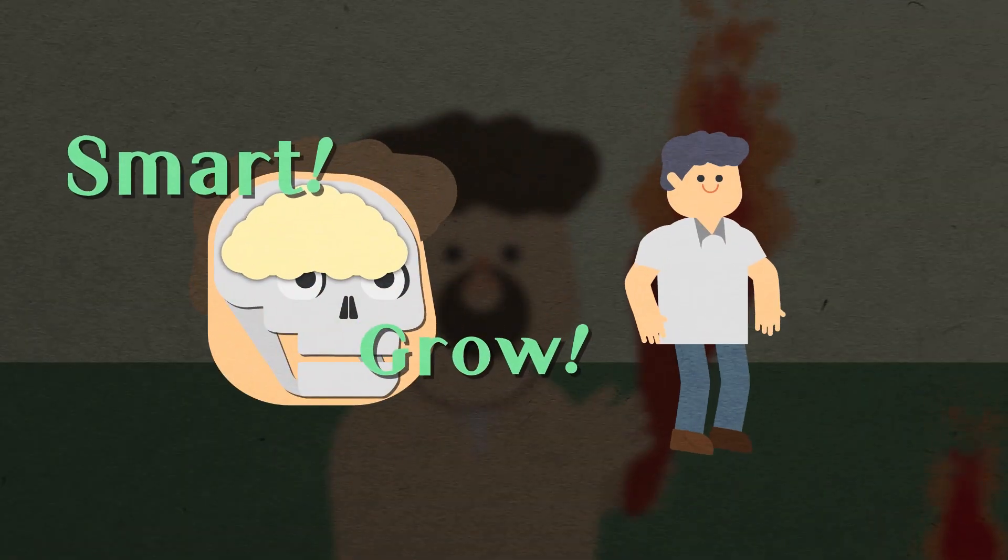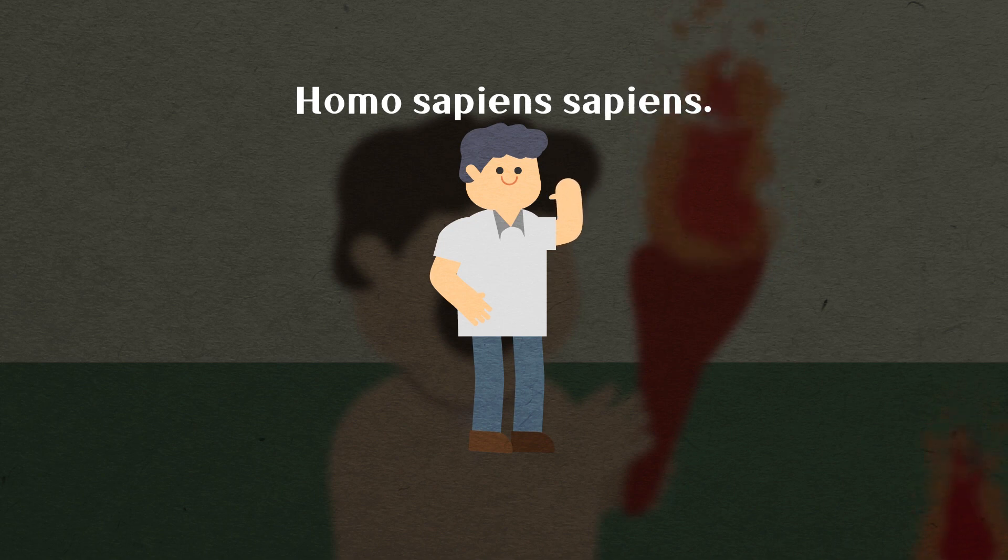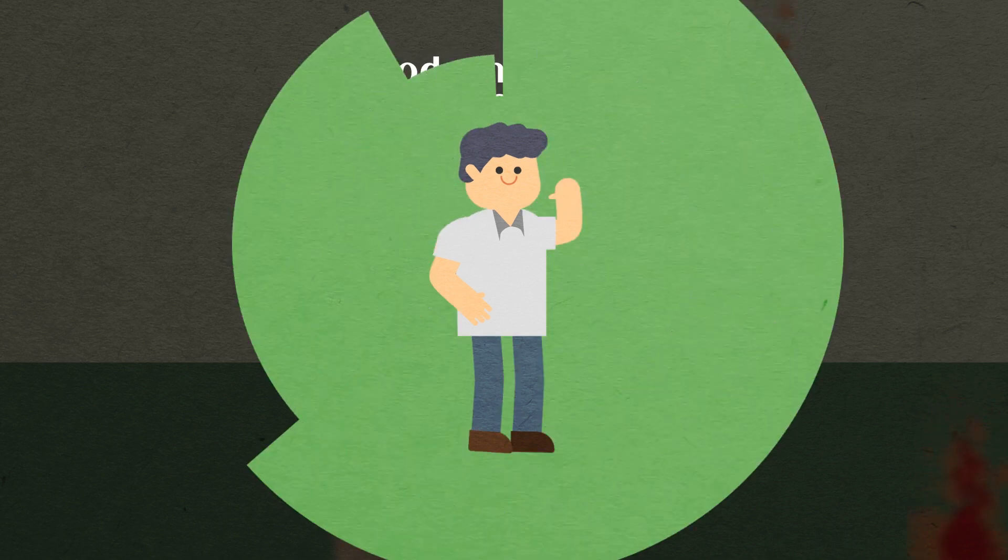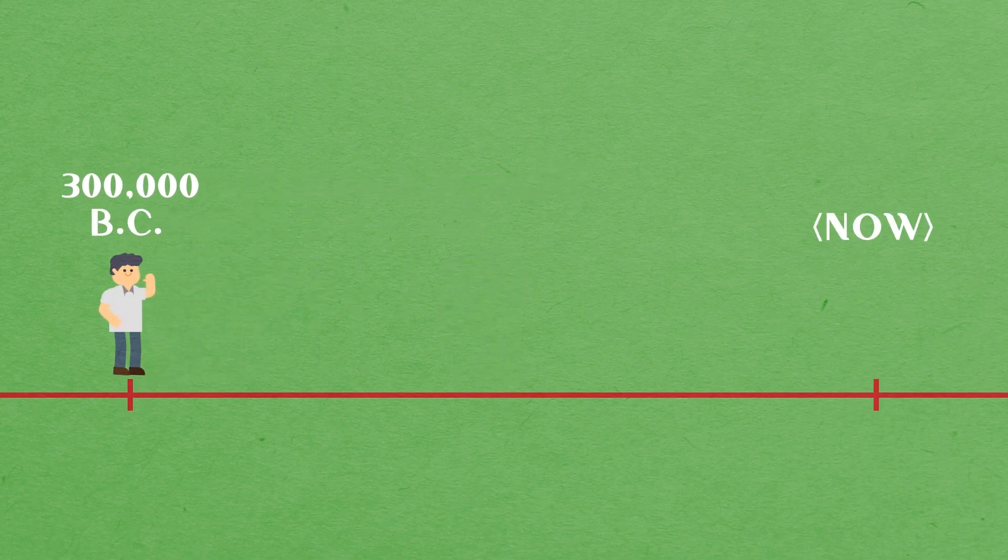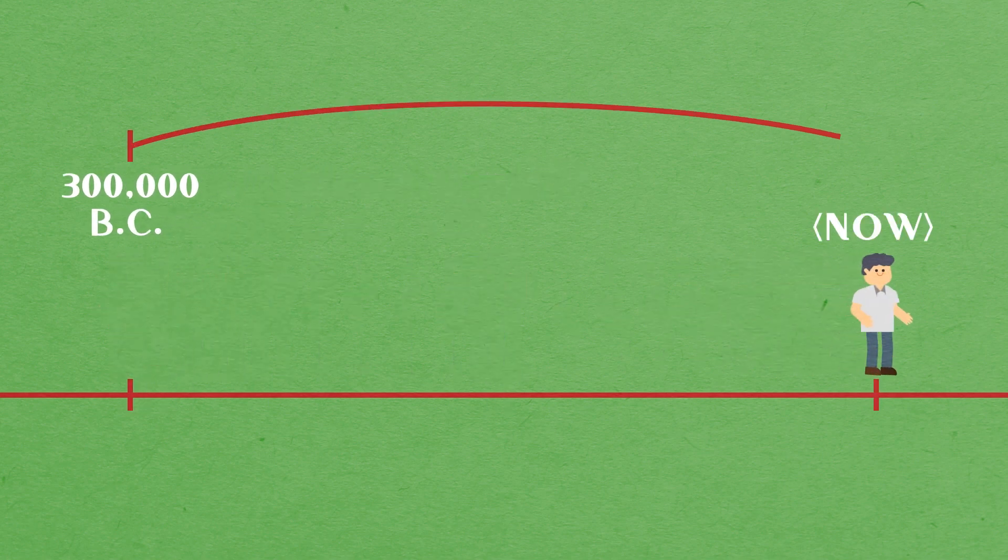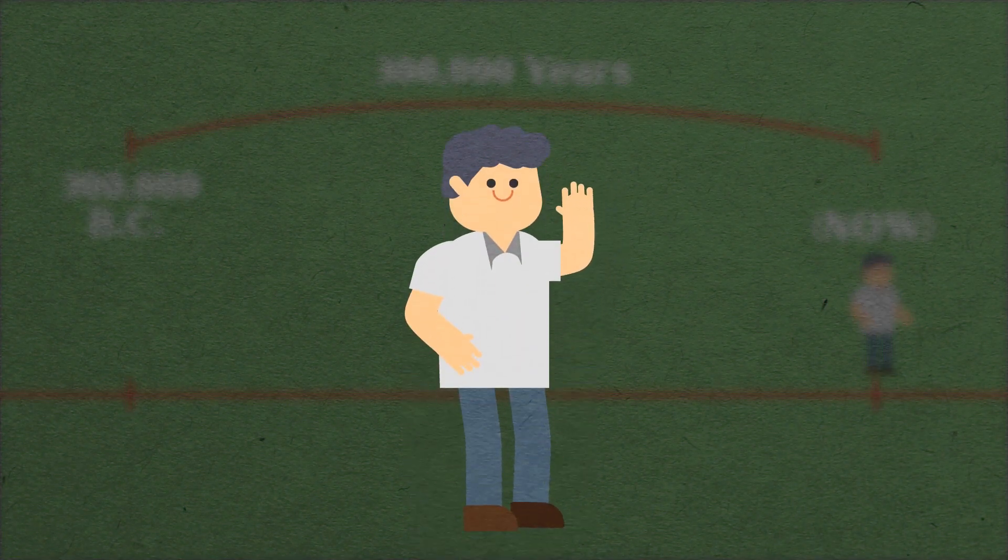As their brains grew larger, their intelligence developed, and they became Homo sapiens sapiens, or modern humans. The advent of Homo sapiens is estimated at about 300,000 BC. This means that modern humans would have existed for 300,000 years, long enough for a new species to develop through evolution.